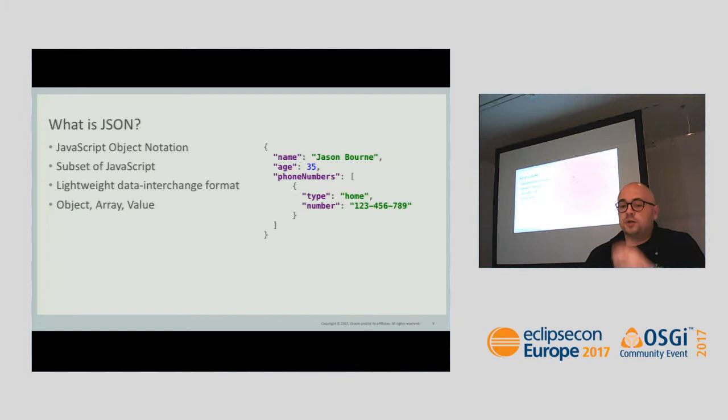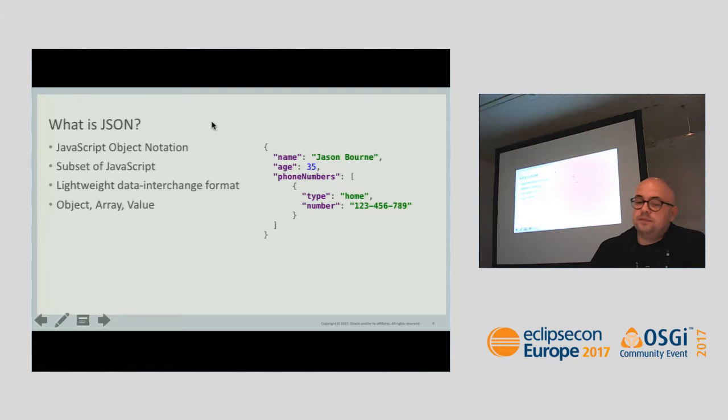JSON stands for JavaScript Object Notation. I think you know what that is. The text format: objects are inside curly brackets, lists are inside square brackets, and there are keys and values. It's a very simple subset of JavaScript — a lightweight data interchange format. It's widely used now with microservices exchanging JSON with each other. It's very simple: only three types — JSON object, JSON array, JSON value.